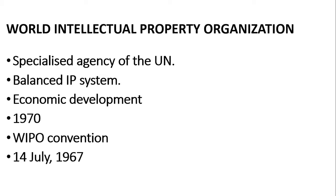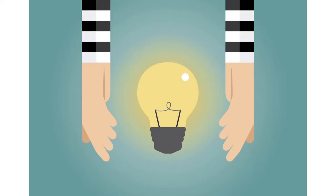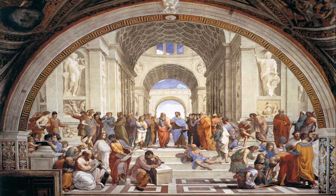An important question should arise in your mind by now: why did the world need an IP organization? The answer is fear. When foreign exhibitors refused to attend the International Exhibition of Inventions in Vienna in 1873, the need for a system to protect IP internationally became evident — because exhibitors were afraid their ideas would be stolen and exploited commercially in other countries.